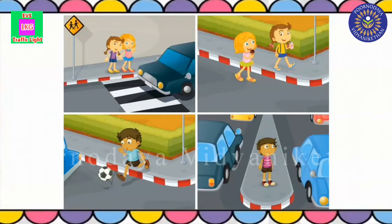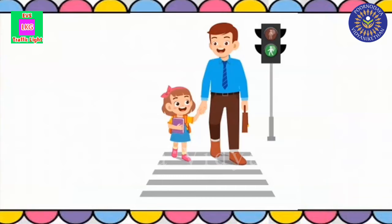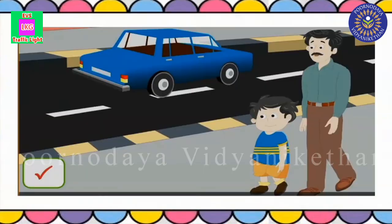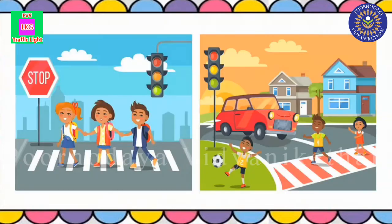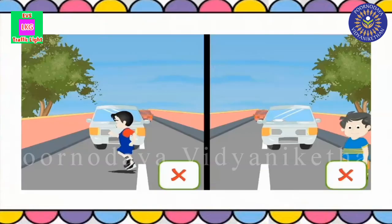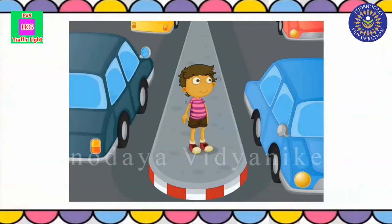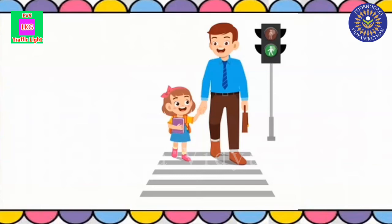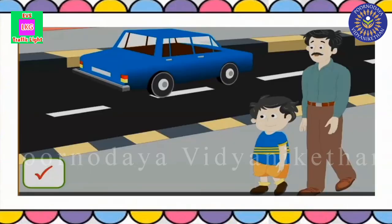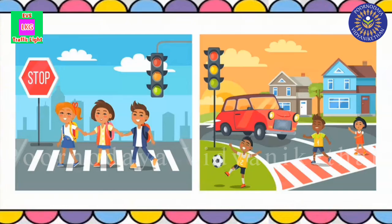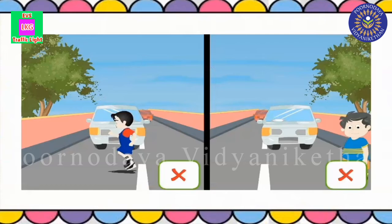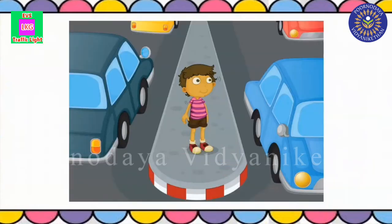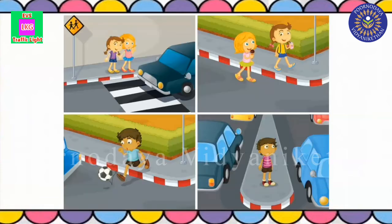Children, to be safe on the road, we have to follow certain rules. Always hold an elder's hand on the road. Always walk on the footpath. Always cross the road using zebra crossing. Do not run or play on the road. Never go alone on the road. We must follow these rules to be safe on the road.